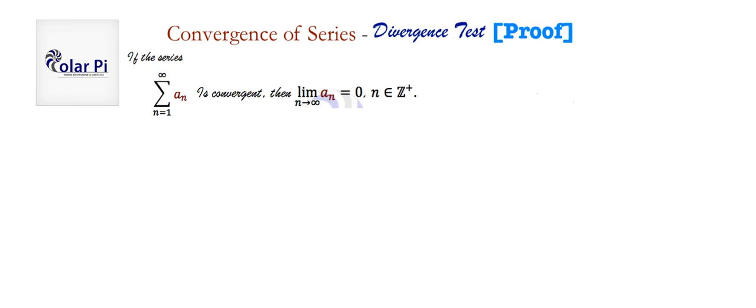And an example of how the converse is not true is the famous harmonic series. And that's because the harmonic series has a_n equal to 1 over n. And therefore, limit as n goes to infinity of 1 over n is equal to 0. But the harmonic series is famous for being divergent.